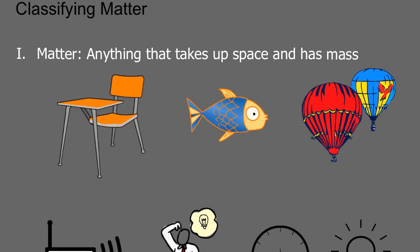Matter can go through that same process. Now before we look at how we classify matter, we just first want to make sure we understand that matter is anything that takes up space and has mass. So examples of that could be a desk takes up space, has mass, fish, as well as hot air balloon.